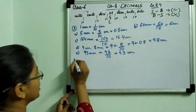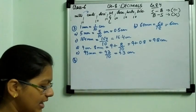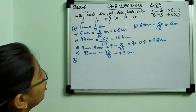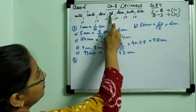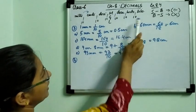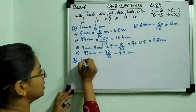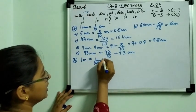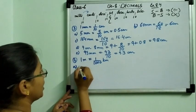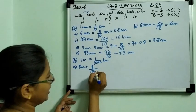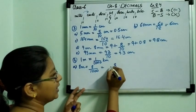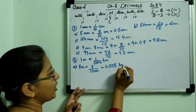Now question number 4: express as kilometre. We have to convert to kilometre and all values are given in metre. Metre to kilometre — small to big means divide. Between metre and kilometre there are 3 zeros, so we divide by 1000. So 1 metre equals 1 by 1000 kilometre. In part A: 8 metre divided by 1000. There are 3 zeros so decimal comes after 3 digits from the right — that is 0.008 kilometre.